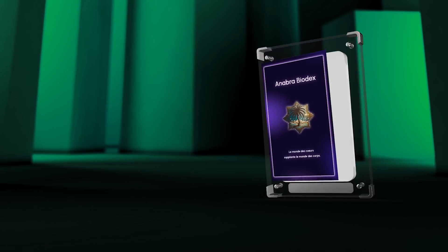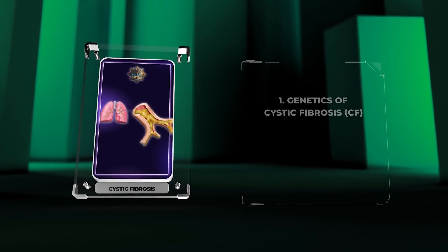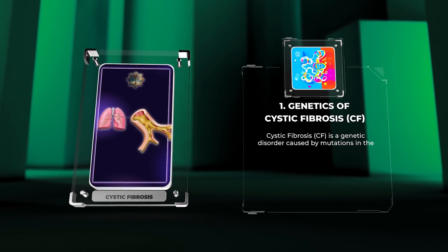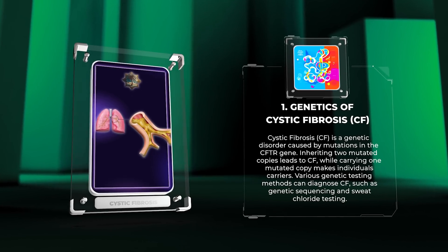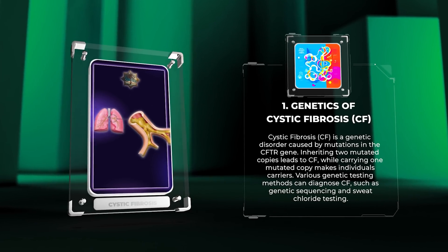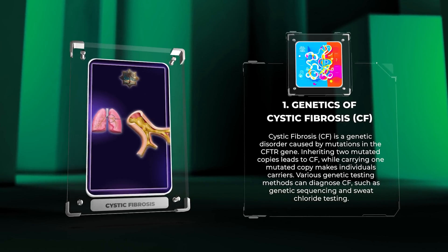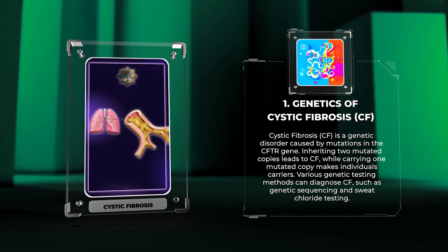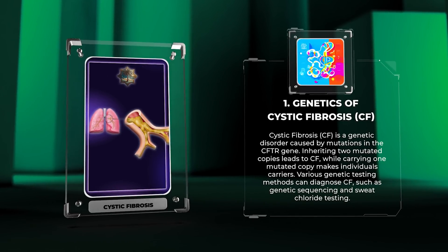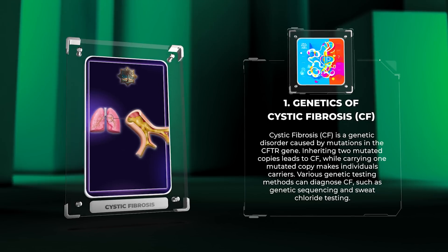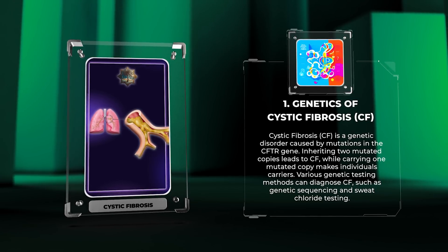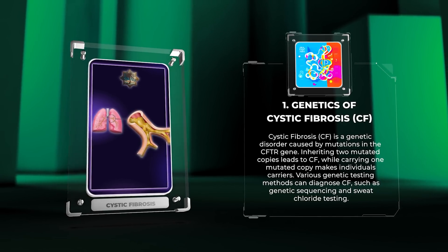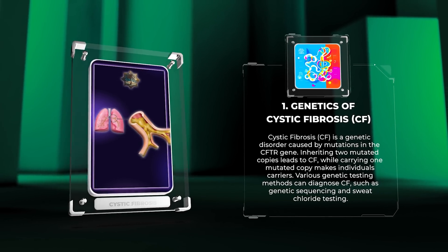Cystic fibrosis is a genetic disorder caused by mutations in the CFTR gene. Inheriting two mutated copies leads to CF, while carrying one mutated copy makes individuals carriers. Various genetic testing methods can diagnose CF, such as genetic sequencing and sweat chloride testing.